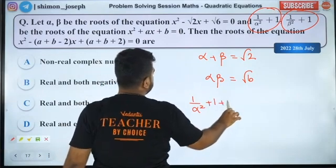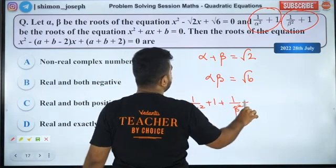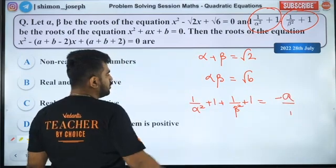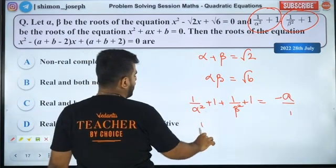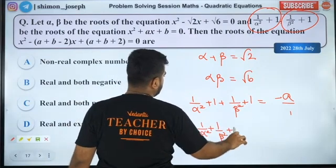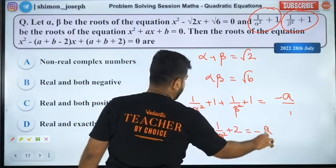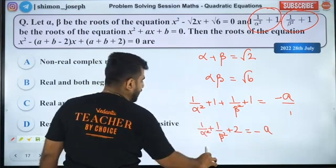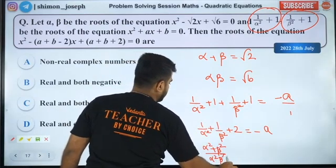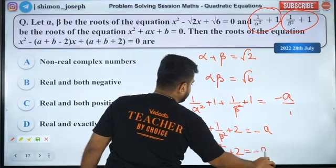I will erase it. Sum of the roots is... Sir, sum of the roots is minus b by a, sir. So in the roots we can do the sum: 1 by α² plus 1 by β² plus 2 equal to minus a. So this is LCA. So we will get α² plus β² by α² β² plus 2 equal to minus a.